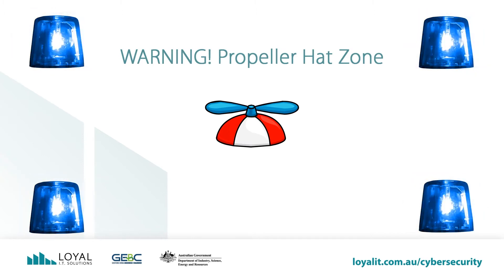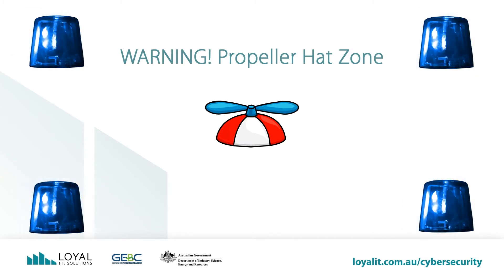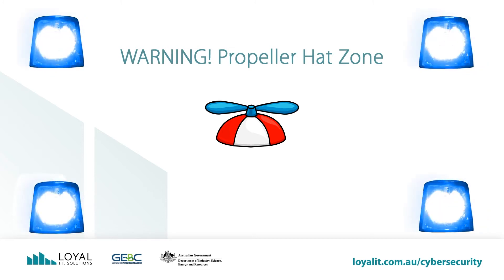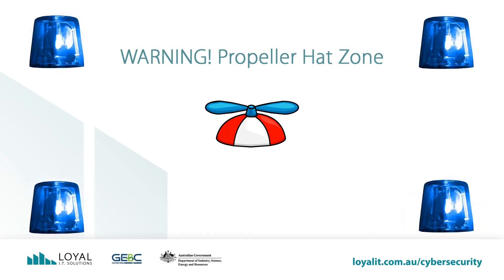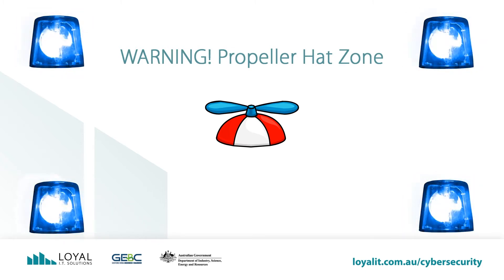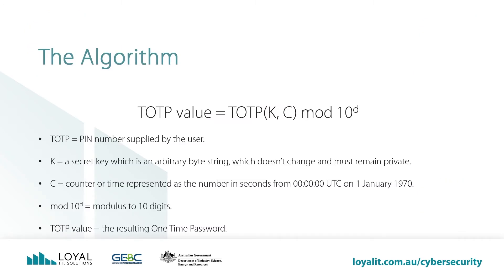It's time for a propeller hat zone. We'll be talking about the mathematics of the one-time password. It won't get too heavy, but there are a couple of new concepts in this section. This will be rated one propeller hat out of five. This is the algorithm — it looks pretty complex. Ultimately, what we see is that we have a PIN number supplied by the user, a secret key which is an arbitrary byte string which doesn't change and must remain private. It requires a counter or time represented as the number of seconds from all zeros UTC on January 1st, 1970, which is called UNIX or epoch time.